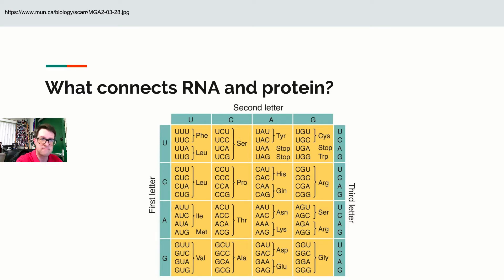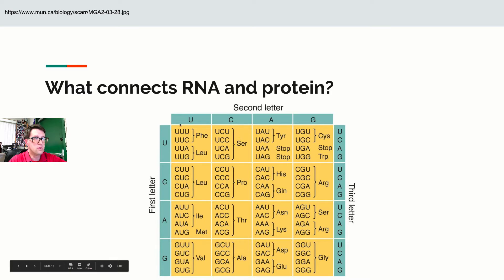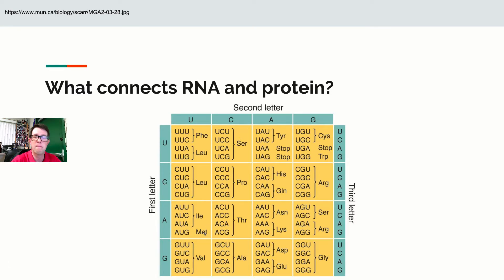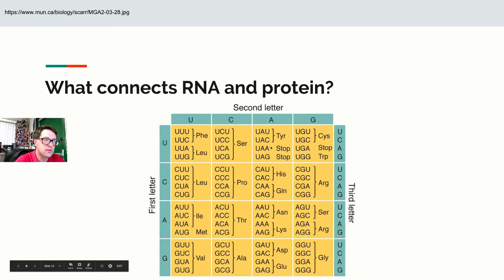Methionine turns out to be the start codon — AUG is the universal start codon. The stop codons are UAA, UAG, and UGA. Those are the four codons I know off the top of my head; the other 60 I have to look up. You can find UAA, UAG, and UGA in the genetic code table.